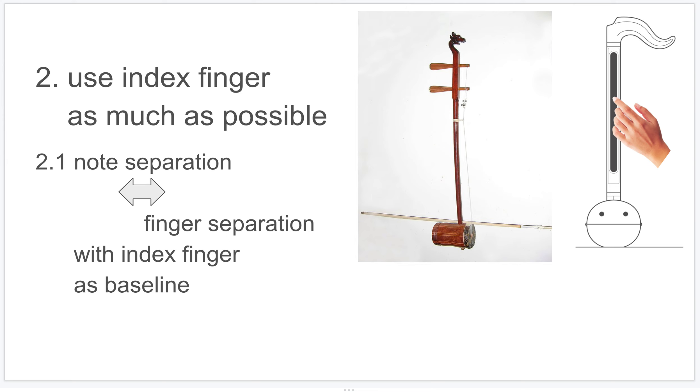The second tip is to use the index finger as much as possible for obvious reasons. It is the strongest finger, the more flexible, the more agile one among all the four fingers. I also feel the otamatone is very similar to a Chinese instrument pictured here, which has one vertical string and one horizontal string. You use the horizontal string to touch the vertical string to play. In this analogy, the otamatone vertical tape is the vertical string and one finger could be this horizontal string.